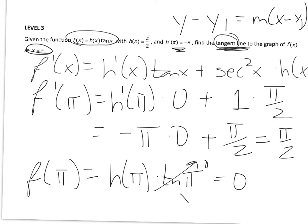So my y coordinate is 0. Final answer to this question, y minus 0 equals pi over 2 times x minus pi.